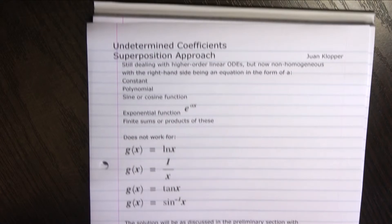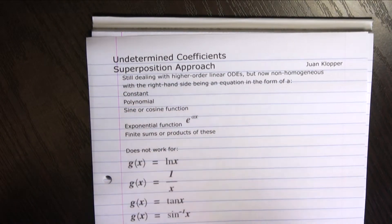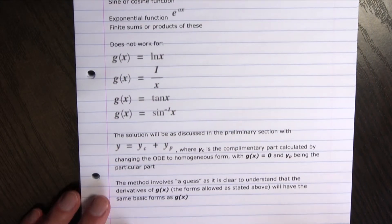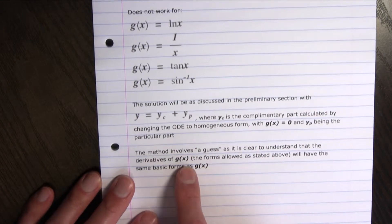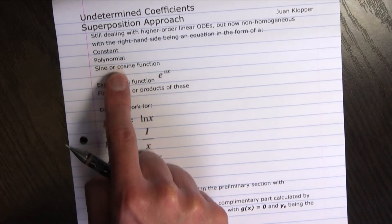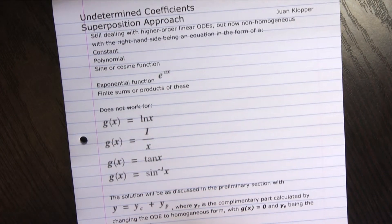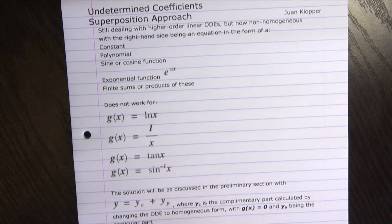And the reason why that is so, why we can only use it in this form, is that it's easy to understand that the derivatives of g of x, if it is in one of these forms, its first derivative, second order derivative, will have basically the same form as the g of x.